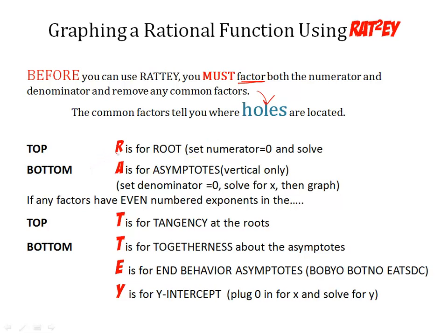Now, on the top, R is for the root. Remember, this is x-intercepts. You set the numerator equal to 0 and solve it for x. A is for asymptotes, vertical asymptotes only. You set the denominator equal to 0, solve it for x, and then we graph it. So this is your asymptotes, A for asymptotes.